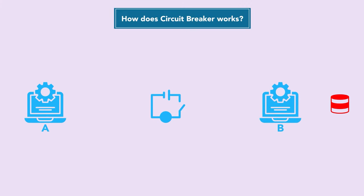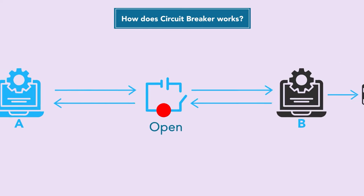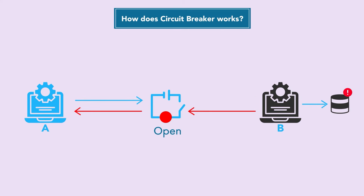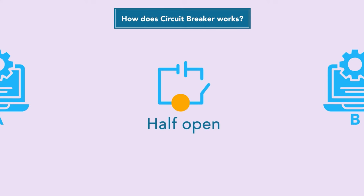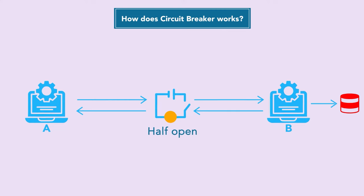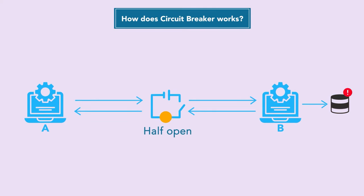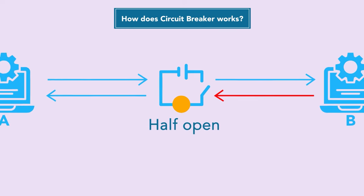Here is a detailed diagram of the circuit breaker. When closed, calls from A go to B and the response is returned normally. When something goes wrong and service B degrades, the circuit breaker switches to open state and all calls are rerouted with a failure response. In the half-open state, the service is given time to recover, and test calls from A to B are made. If successful, the circuit breaker switches back to closed. If still failing, it returns to open state.